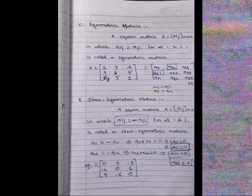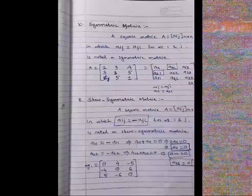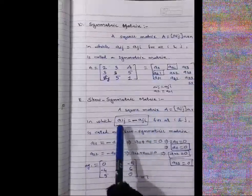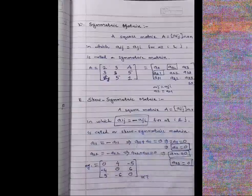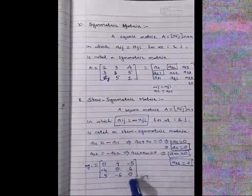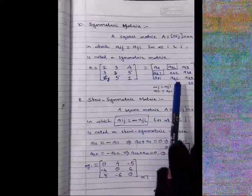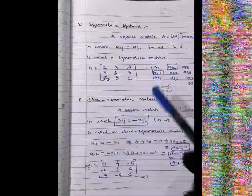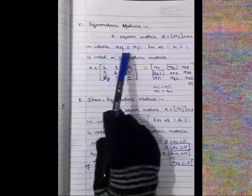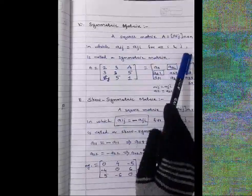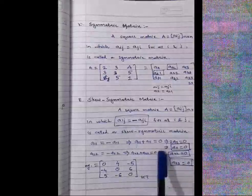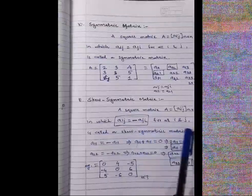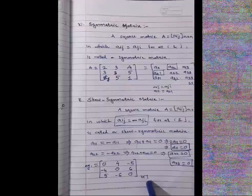Summary of difference: a symmetric matrix has two conditions — square matrix and Aᵢⱼ = Aⱼᵢ. A skew-symmetric matrix has three conditions — square matrix, Aᵢⱼ = −Aⱼᵢ for all i and j, and all diagonal elements equal to zero.